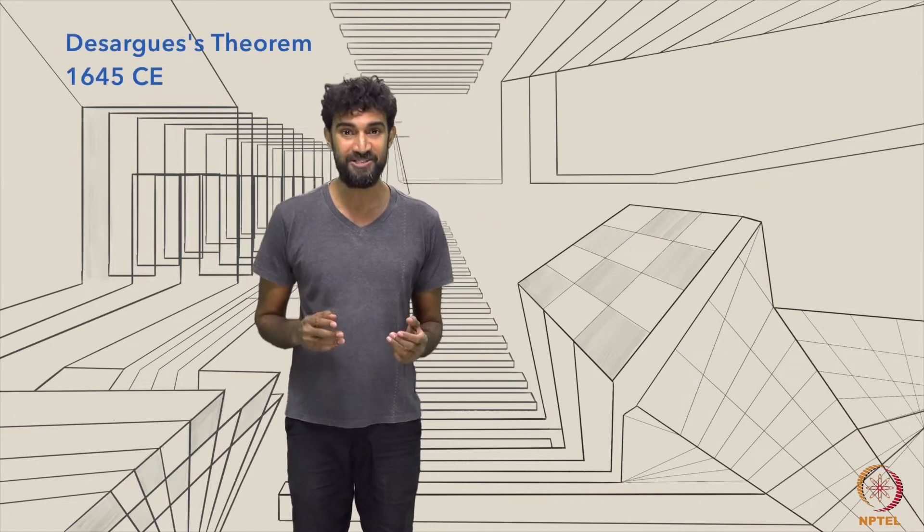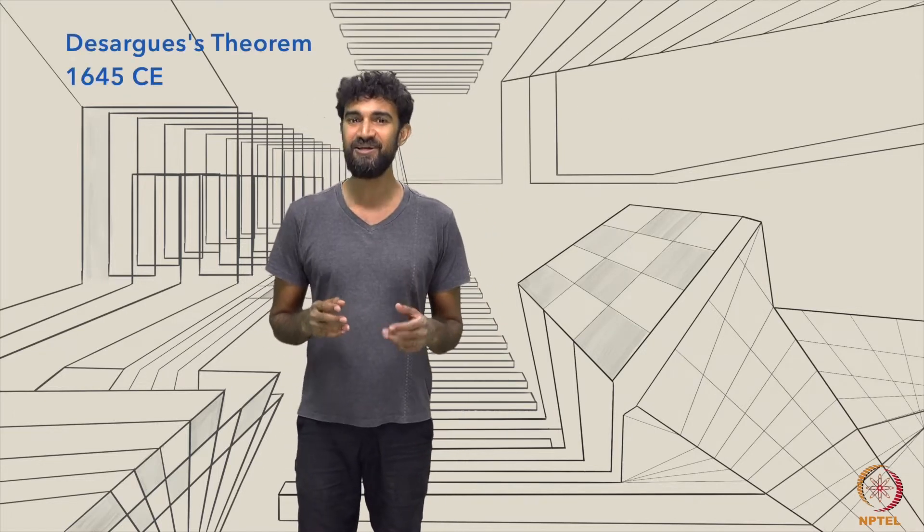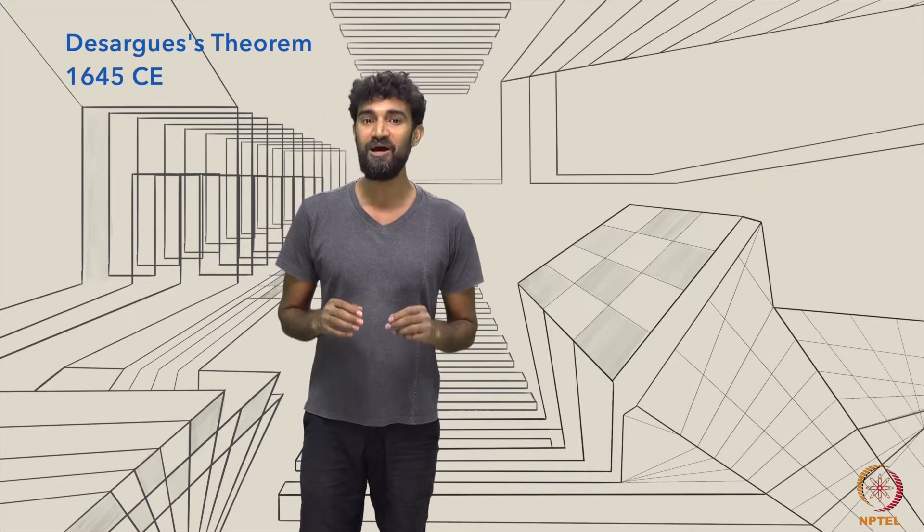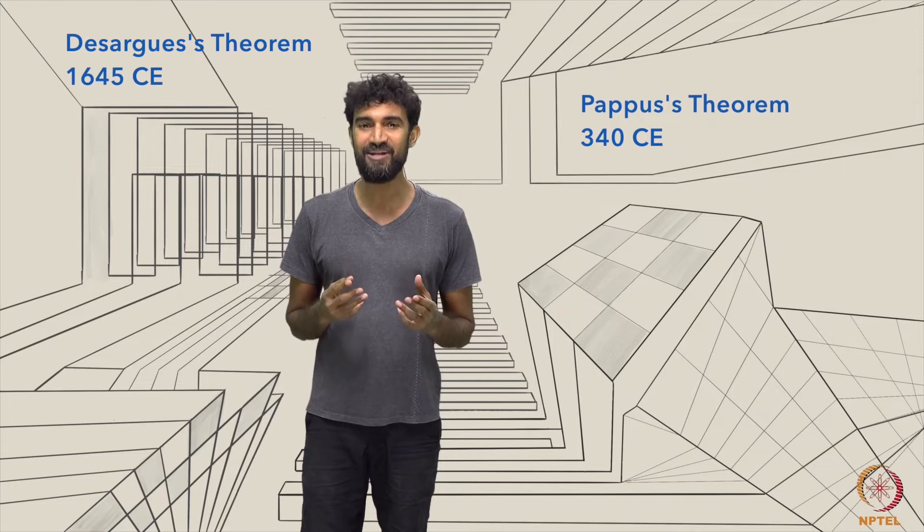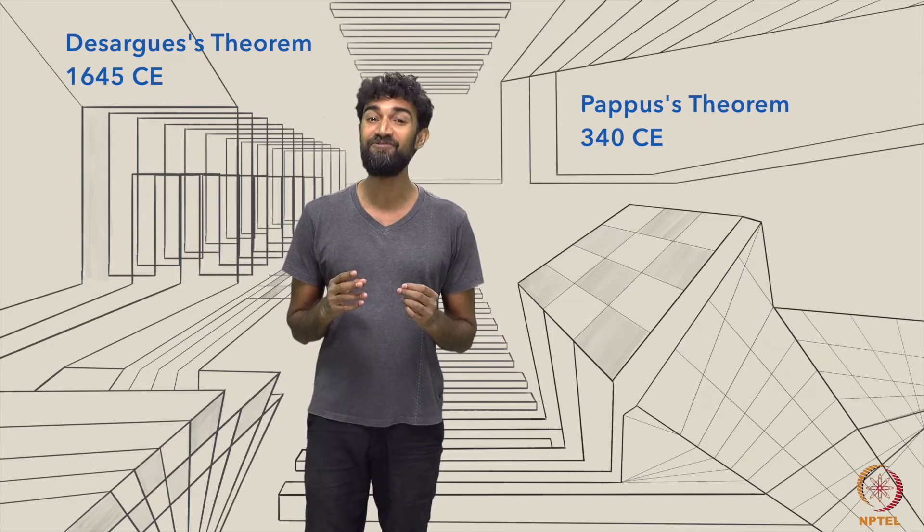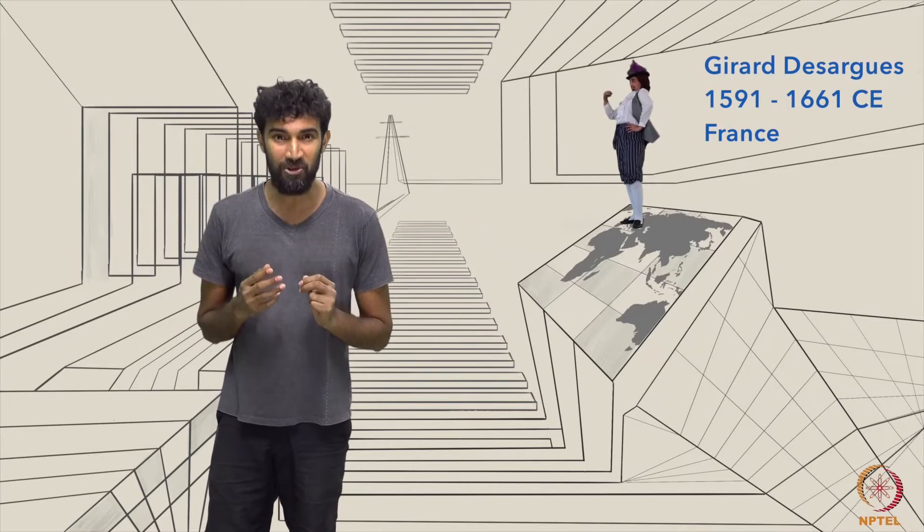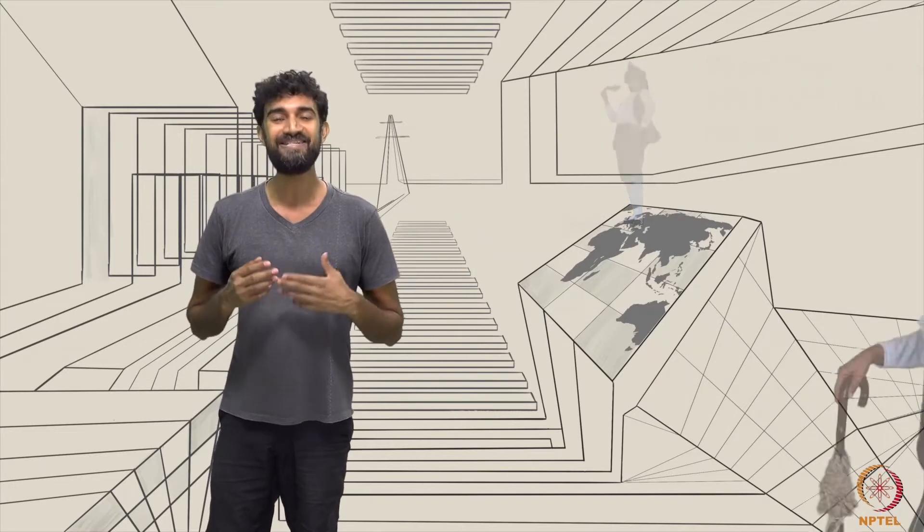Two of the most famous coincidences of projective geometry are Desargues' theorem, recorded in France around 1645, and the much older Pappus' theorem, which was recorded in Alexandria, Egypt around 340 AD. But who better to introduce these results than Gerard Desargues, the mathematician who first formalized projective geometry as a legitimate branch of mathematics?